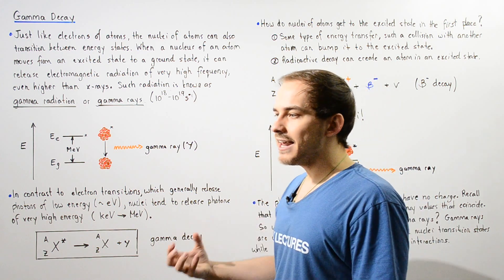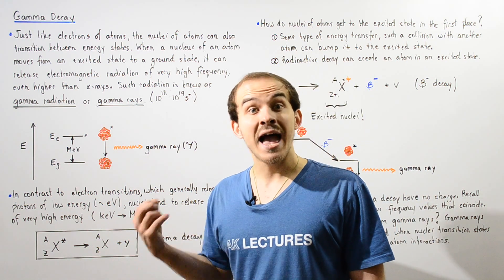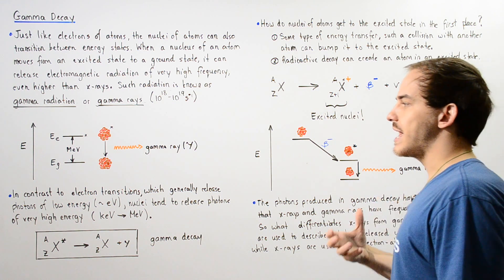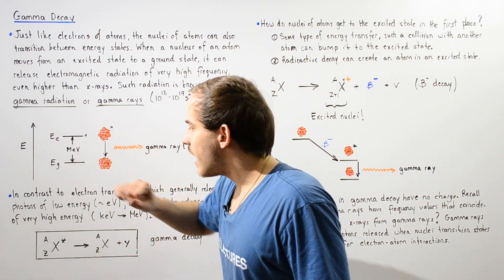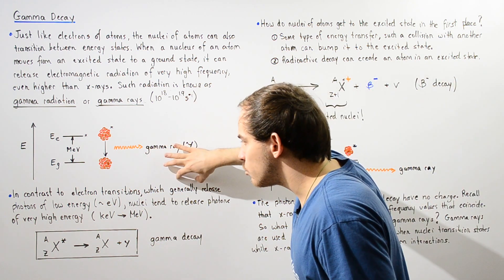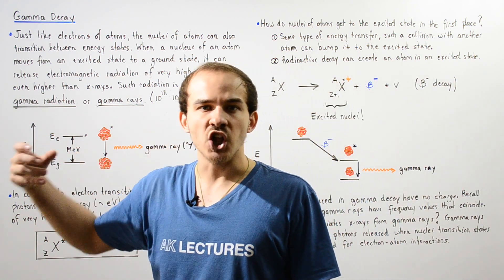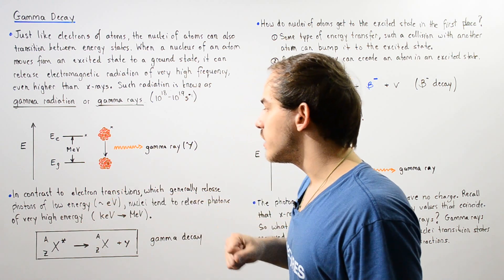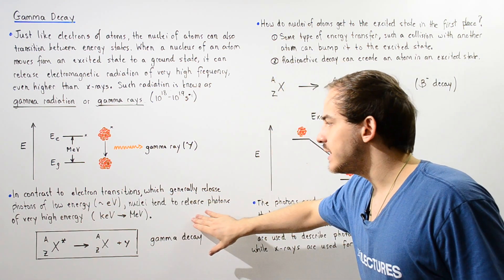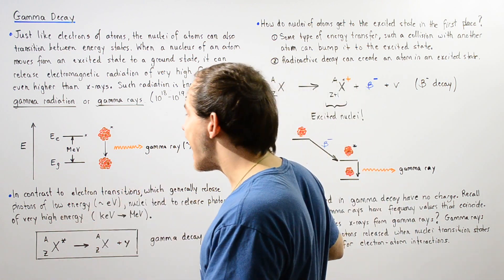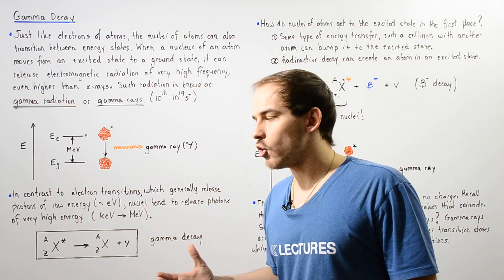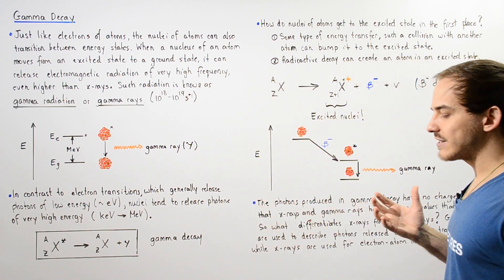Remember, the energy of any photon depends on the frequency of that electromagnetic radiation. In contrast to electron transitions, which generally release photons of low energy about one electron volt, nuclei of atoms tend to release photons of very high energies, ranging from kilo electron volts to mega electron volts.